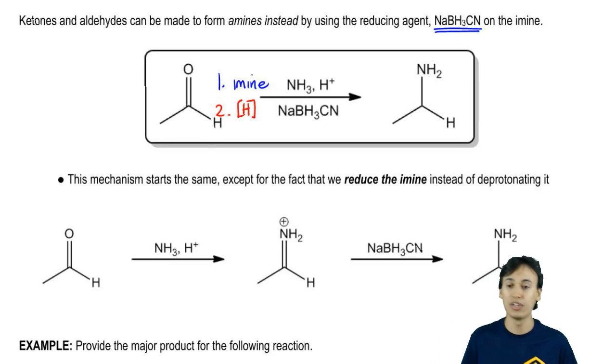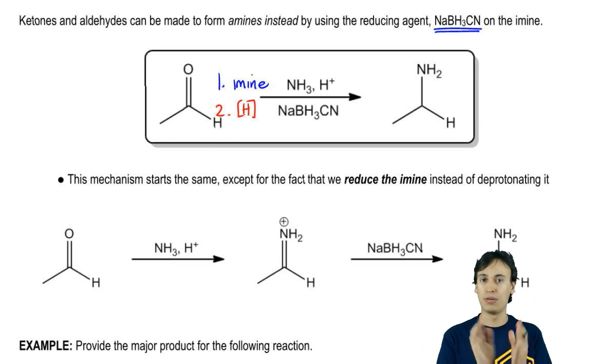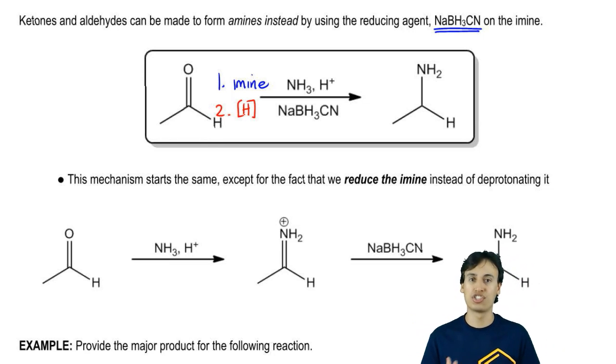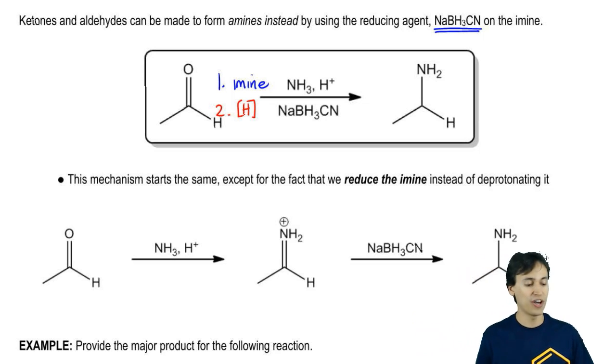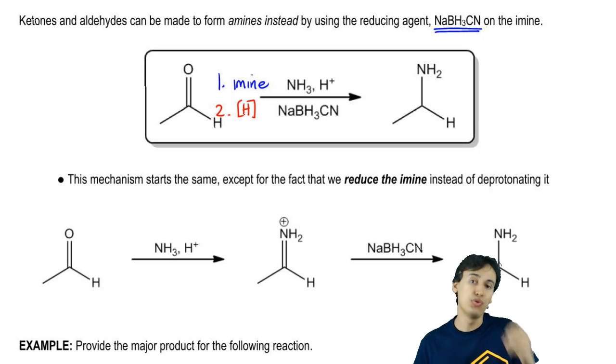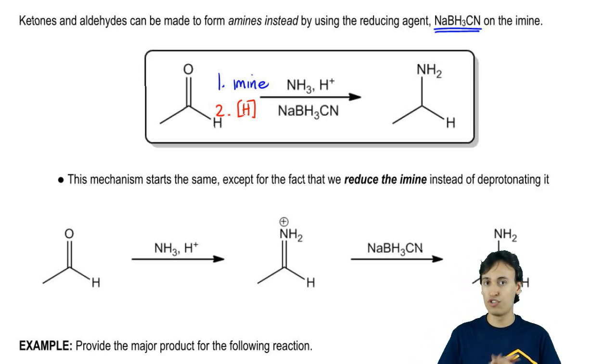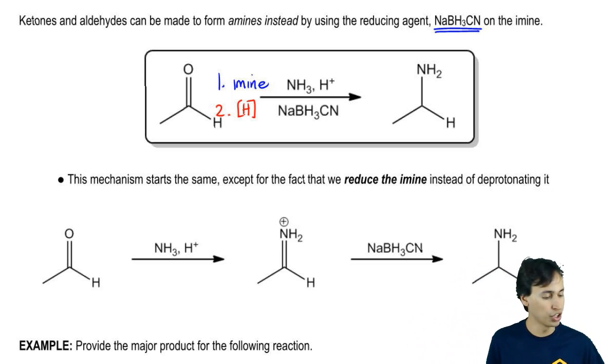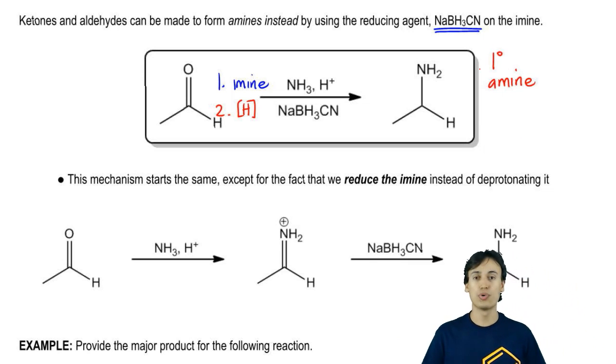Remember, a reducing agent is one that adds hydrogen. I'm just putting H in brackets just to generalize that this is a reducing agent. What we're going to find is that if you use the reducing agent in the second step, instead of just leaving it as an imine, what you're going to wind up getting is an amine. As you can see, this is actually a primary amine. It turns out that reductive amination is a really convenient way to make amines.